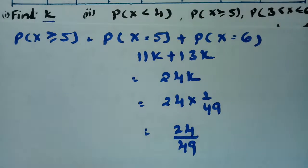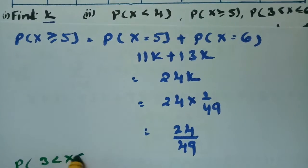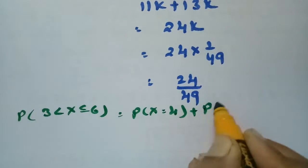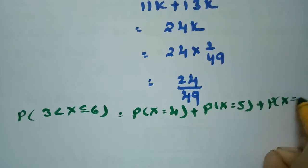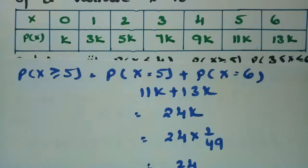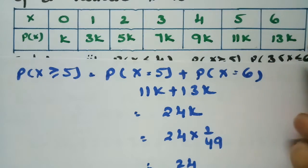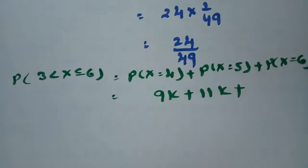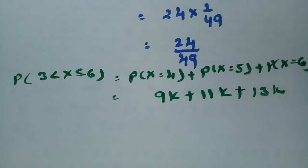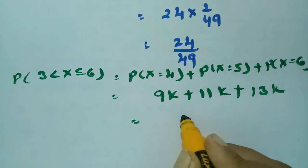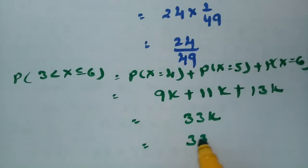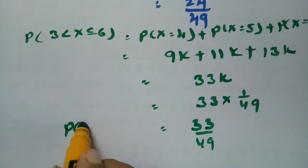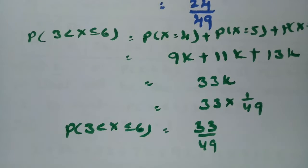Next, we find the probability of 3 less than x less than or equal to 6, meaning x = 4, 5, and 6. The probability of x = 4 is 9k, x = 5 is 11k, and x = 6 is 13k. Adding these: 9k + 11k + 13k = 33k. With k = 1/49, we get 33/49. Therefore, the probability of 3 less than x less than or equal to 6 is 33/49.